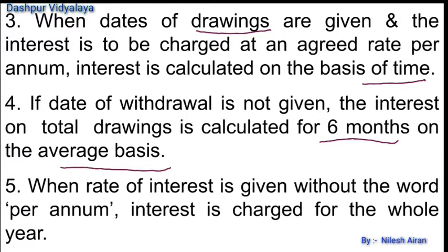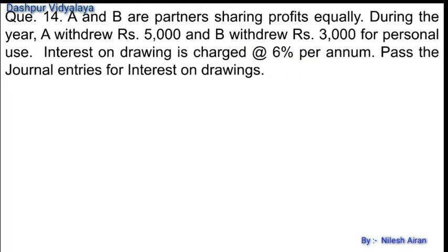When the rate of interest is given without the words 'per annum', interest is to be charged for the whole year. Now let's see a question: A and B are partners sharing profits equally. During the year, A withdrew rupees 5000 and B withdrew rupees 3000 for personal use. Interest on drawings is charged at the rate of 6% per annum.